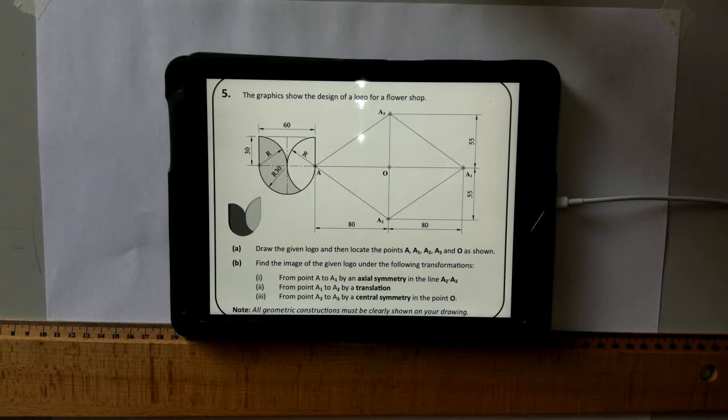Find the image of the given logo under the five transformations: from point A to A1 by an axial symmetry in the line A2 to A3, from point A1 to A2 by a translation, and then finally from point A2 to A3 by a central symmetry in point O.